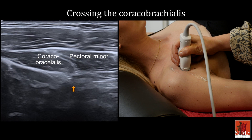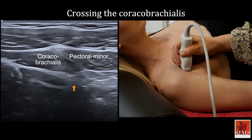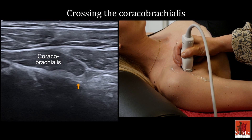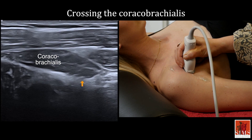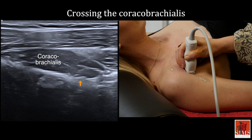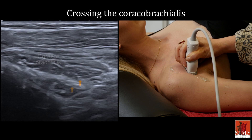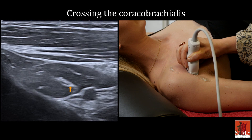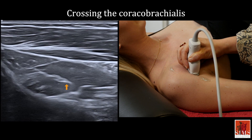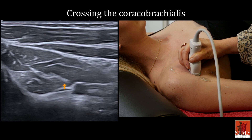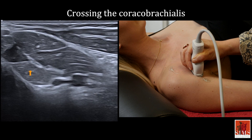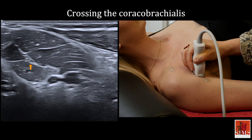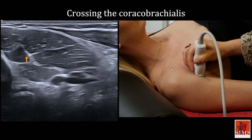The musculocutaneous nerve will be seen on the deep aspect of the coracobrachialis, which it is going to penetrate, and we will be able to follow it along its entire path.